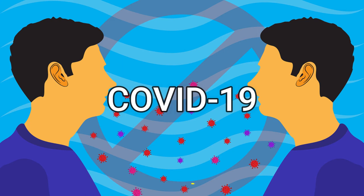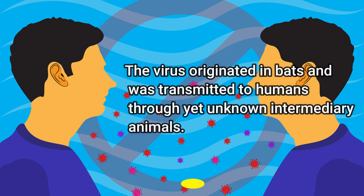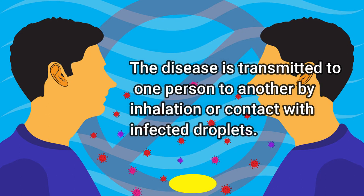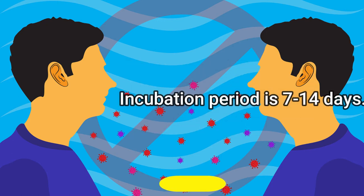COVID-19. The virus originated in bats and was transmitted to humans through yet unknown intermediary animals. The disease is transmitted from one person to another by inhalation or contact with infected droplets. The incubation period is 7 to 14 days.